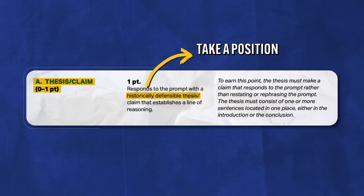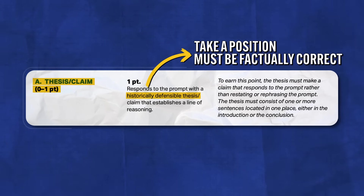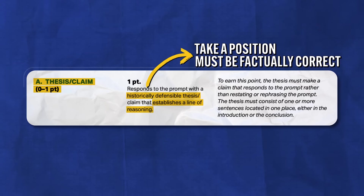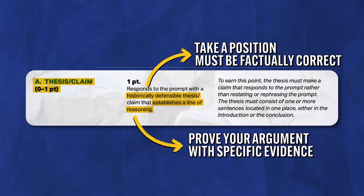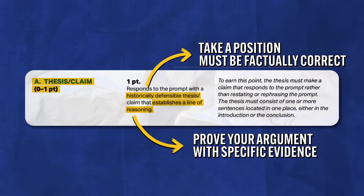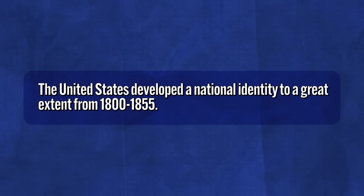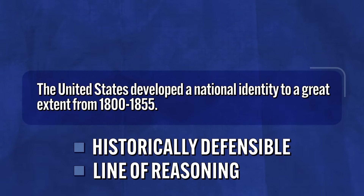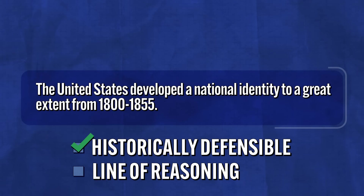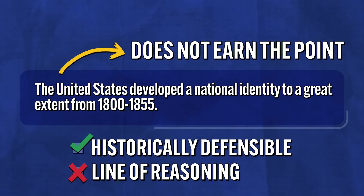First, the thesis must be historically defensible — that means you have to take a position. Was the English Civil War primarily caused by religion or politics? Did imperialism affect economies to a great extent or not much at all? Your thesis needs to take a clear position, and it also needs to be factually correct. Second, the thesis has to establish a line of reasoning, meaning you need to demonstrate how you're going to prove your argument by dropping specific vocabulary into your thesis. A thesis that just says 'The United States developed a national identity to a great extent from 1800 to 1855' takes a position but does not establish a line of reasoning — it would not earn the point.